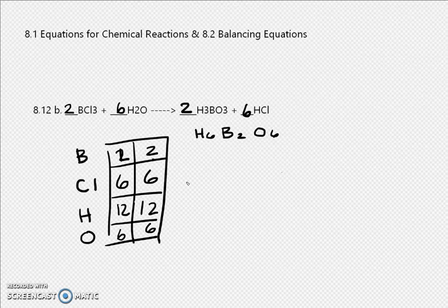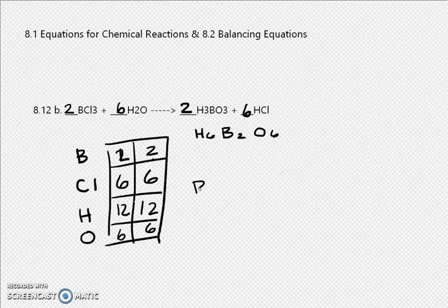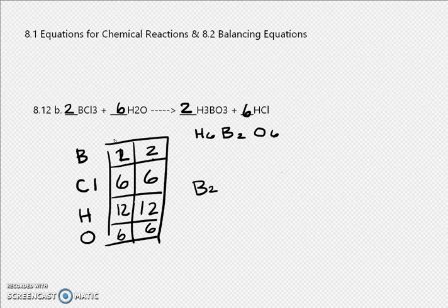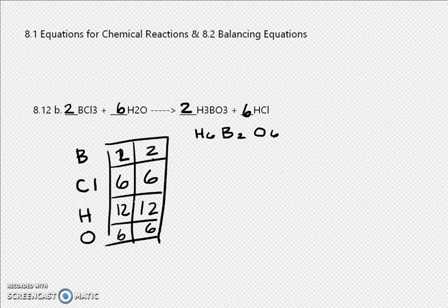If the question asks for atoms: B will have 2 atoms, chloride will have 6 atoms, hydrogen will have 12 atoms, and oxygen will have 6 atoms. So yeah, that's basically it.